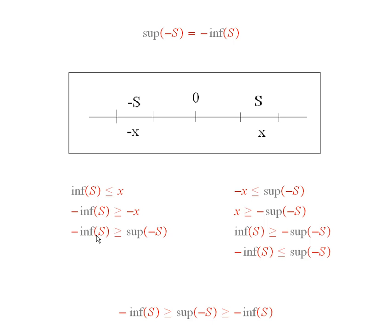Therefore, minus the infimum of S is bigger than or equal to the supremum of minus S. And the supremum of minus S is bigger than or equal to minus the infimum of S. And so, what does that mean? That means that these two really have to be the same, and these inequalities really are equal signs.